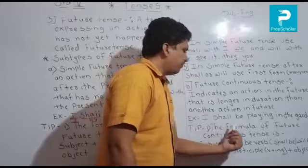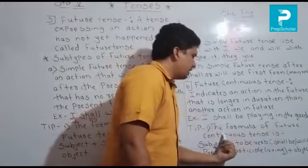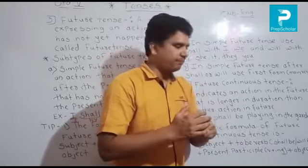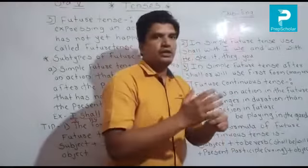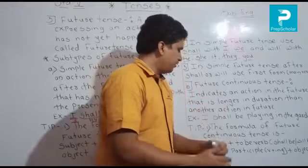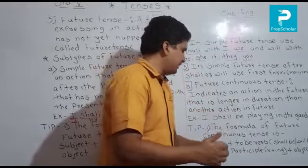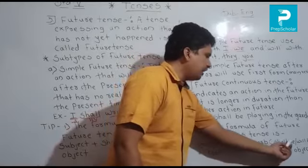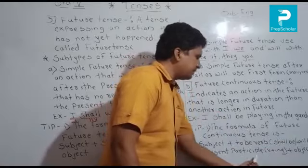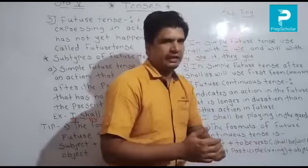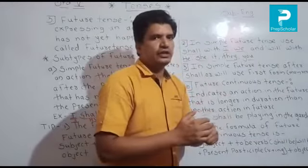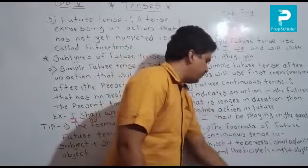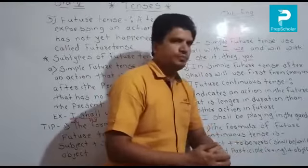Tip number one: the formula of future continuous tense. Formula is very important in tenses. The formula of future continuous tense is: Subject + to be's verb (shall be / will be) + present participle (V+ing) + object.